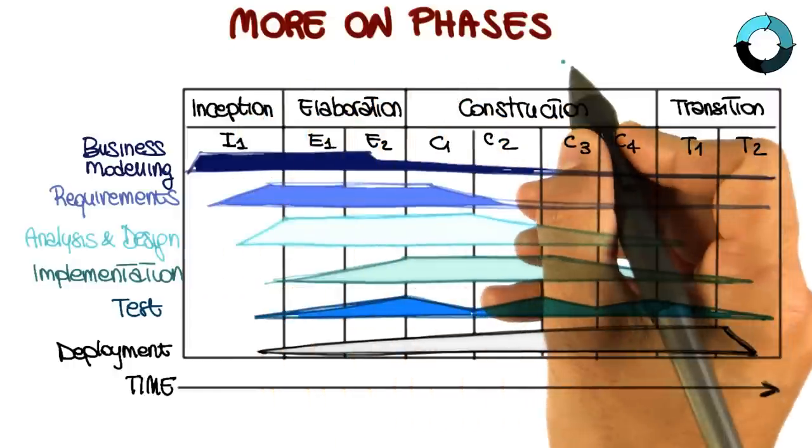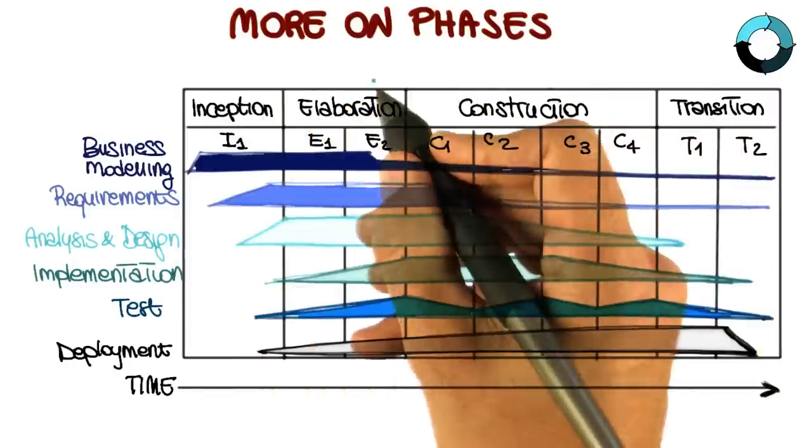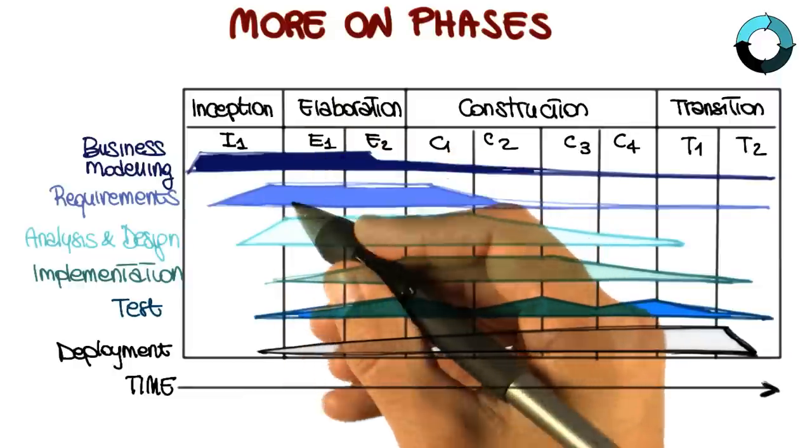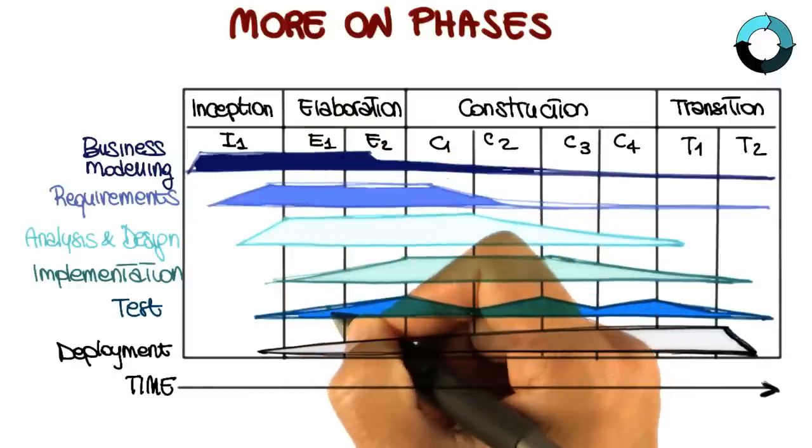Let's talk a little bit more about phases. The Rational Unified Process phases are a fundamental aspect of this process, and we just touched on them, so we just gave a quick overview.